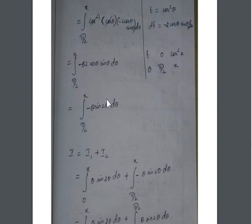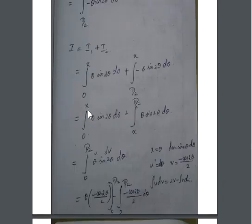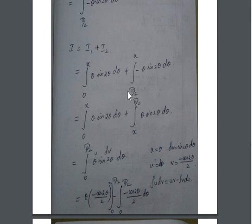Now I = I1 + I2, which gives integral from 0 to x of θ sin 2θ dθ plus integral from π/2 to x of −θ sin 2θ dθ. The second integral runs from π/2 to x, which is not in the standard direction. We convert it to x to π/2 by swapping limits, which introduces a negative sign; the negative times negative becomes positive. So the second part becomes integral from x to π/2 of θ sin 2θ dθ.